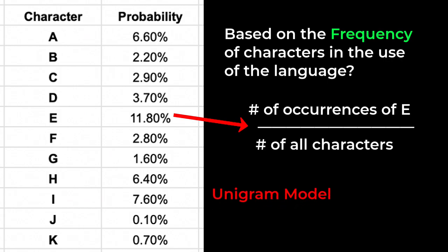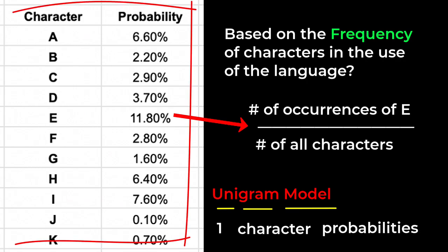Now, this is a unigram model. Uni is one, gram is character here. And model, you can think of it as probabilities. We use single character probabilities to create language.